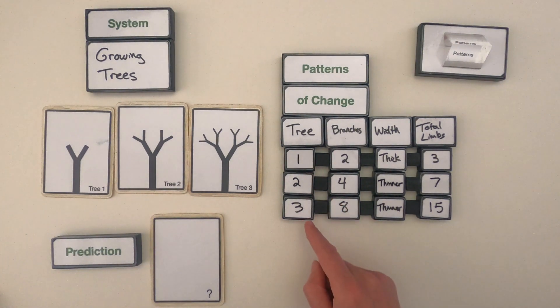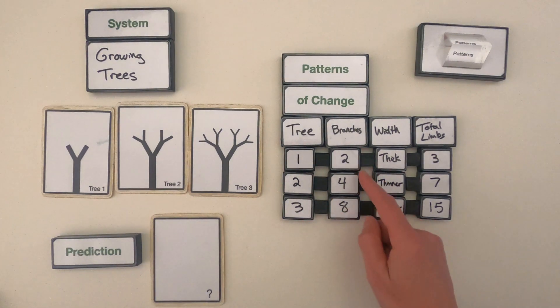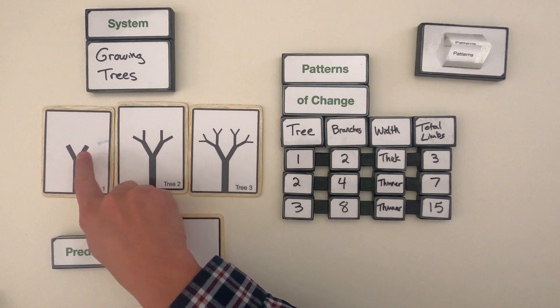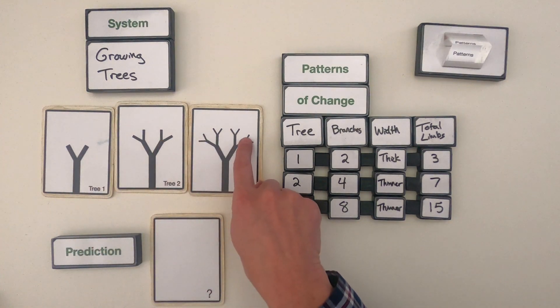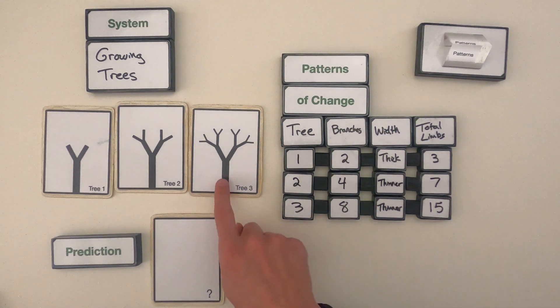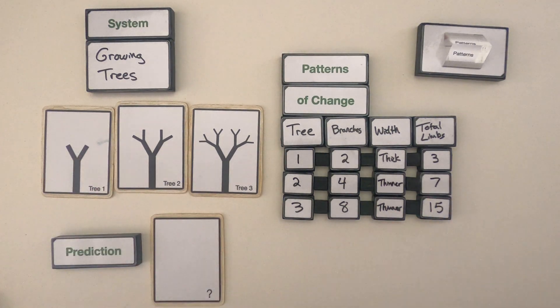Okay, for trees one through three I've seen the branches doubling. So we had two branches, four branches, and eight branches. The width of those branches is really thick in tree one and gets thinner and then thinner as we go. And then I counted the total number of limbs. So the number of limbs, so this would be one, two, three limbs for tree one.